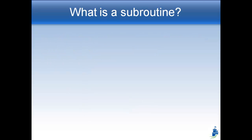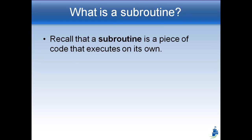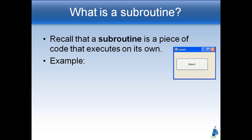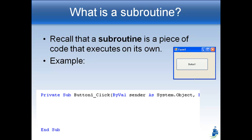So let's start with subroutine and variable scope review. A subroutine is just a piece of code — a little chunk of code that executes by itself and then it's done. For example, here's a form with one button on it. If you double-click the button, code comes up that says 'Private Sub Button1_Click' and then 'End Sub' at the bottom. This tells us the subroutine executes when somebody clicks Button1. Everything in between those two lines runs when you click the button — that's a subroutine.